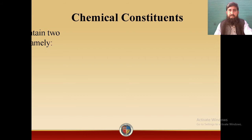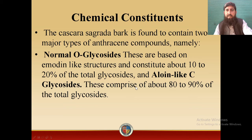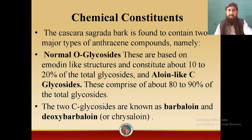Chemical composition: the Cascara sagrada bark contains two major types of anthracene compounds — namely normal O-glycosides, which are based on emodin-like structures and constitute about 10 to 20 percent of the total glycosides, and aloe-like C-glycosides, which comprise about 80 to 90 percent of the total glycosides. So there are two types of anthracene compounds: normal O-glycosides and aloe-like C-glycosides.